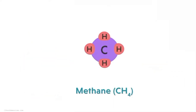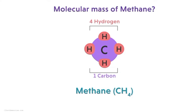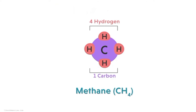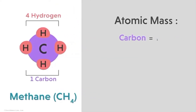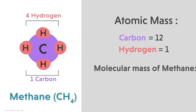In the molecule of methane, there are four hydrogen atoms and one carbon atom. The atomic mass of carbon is 12 and hydrogen is 1. So the molecular mass of methane is equal to 12 plus 1 times 4, which gives us 16 units.